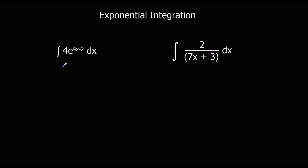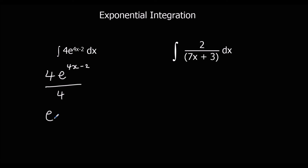Okay, so the first question — we're going to integrate it normally, so it will stay exactly the same, and then divide by the bracket differentiated, which is 4 in this case. The 4 is going to cancel, so that gives us e to the power of 4x minus 2 plus c.